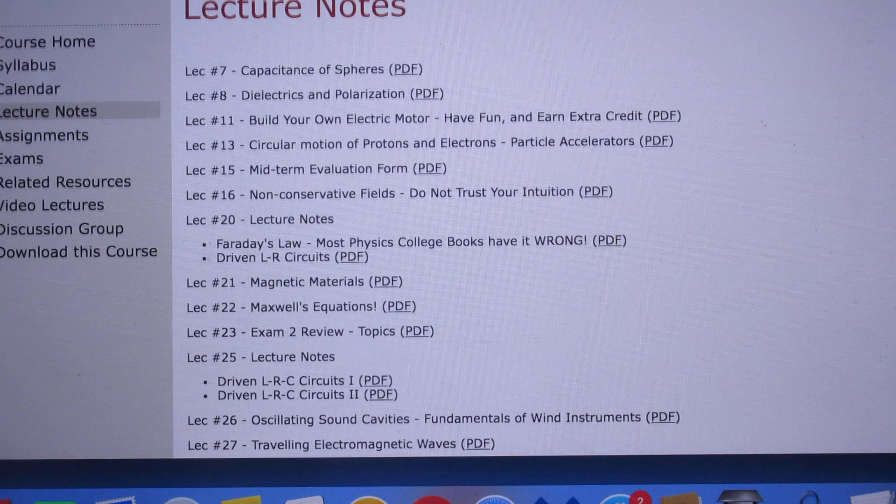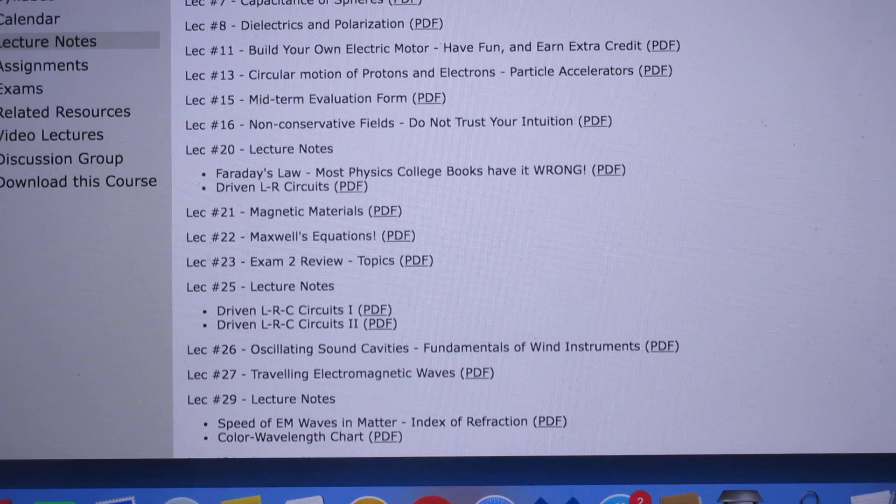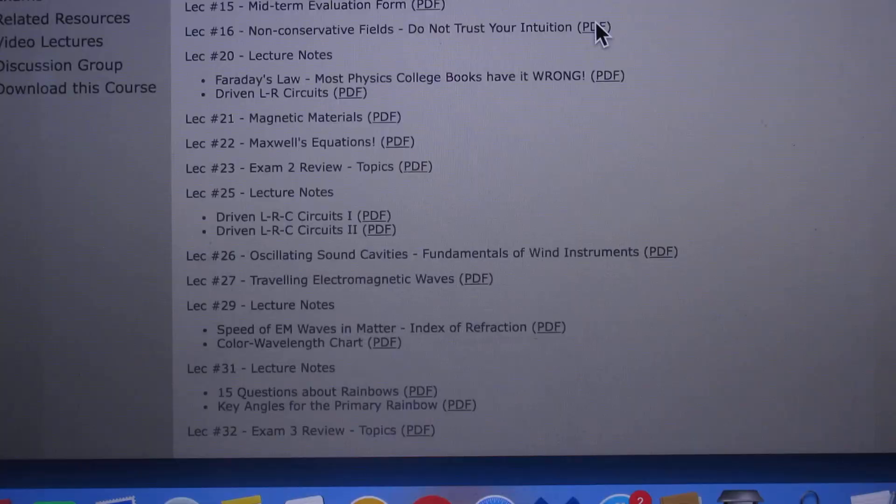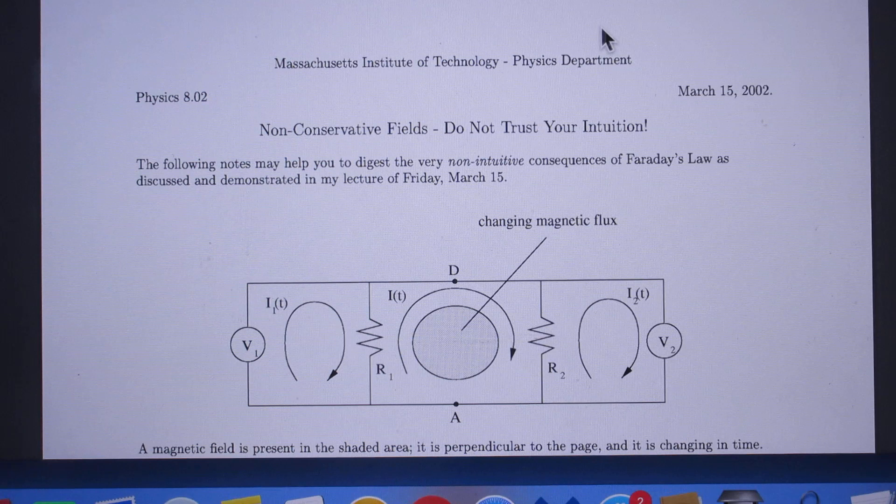Let's look which one. Circular motion of protons and electrons - that was all shown in lectures. Mid-term evaluation. Lecture 16. This one is very important. This is one of the most difficult lectures, Lecture 16.